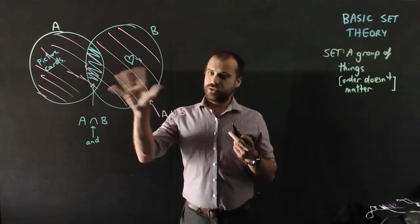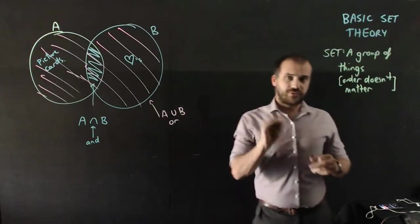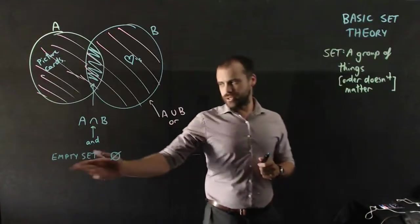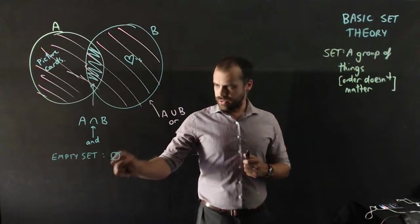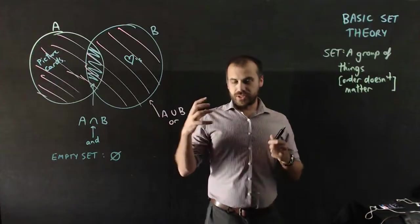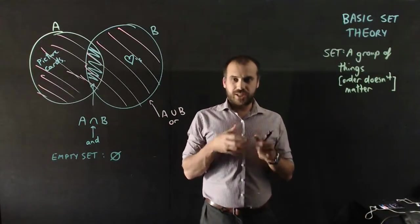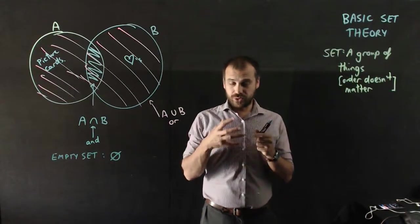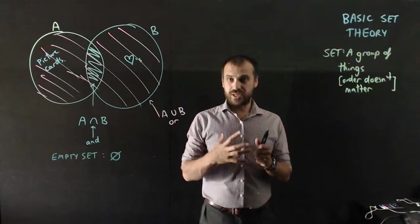Just a couple of things that I need to talk about, about sets. There's an important idea called the Empty Set, a little zero with a diagonal line through it. That's just a set with no objects inside of it. We can still talk about a set having no things in it.